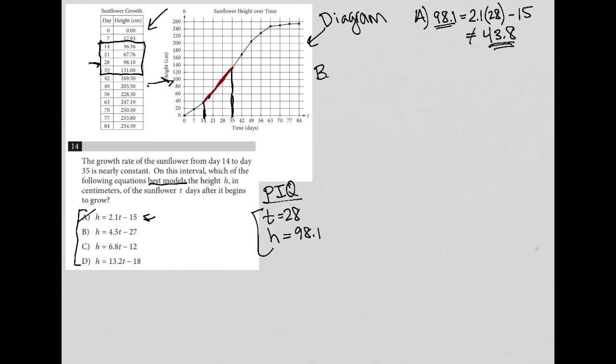Let's go to choice B. I'm going to say 98.1 equals 4.5 times 28 minus 27. I multiply 4.5 times 28 and then subtract 27. What I get is 98.1 equals 99. Now that's very close, so I'm going to keep B as a contender. If B is the only one that's very close, then I know B is the answer.